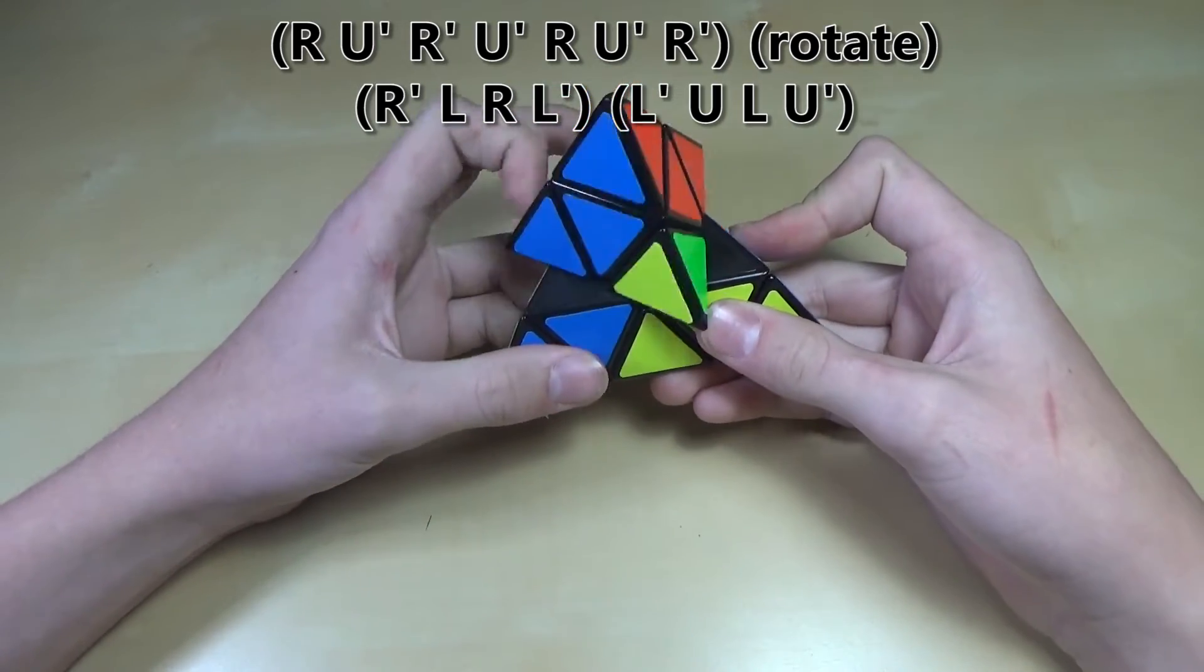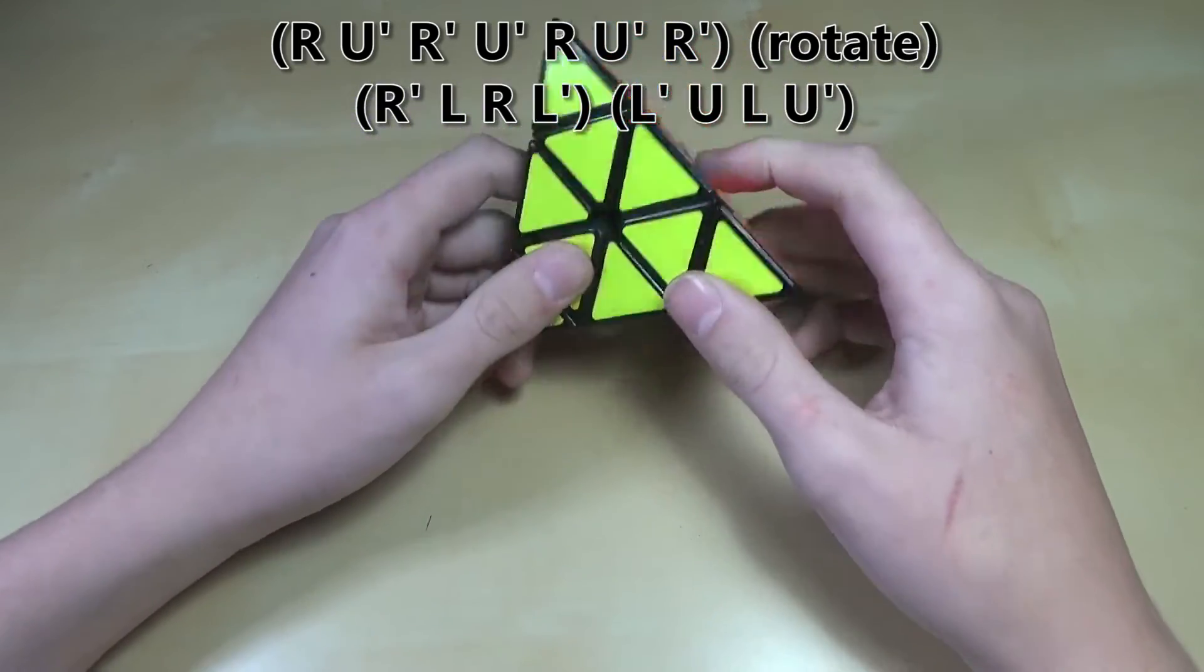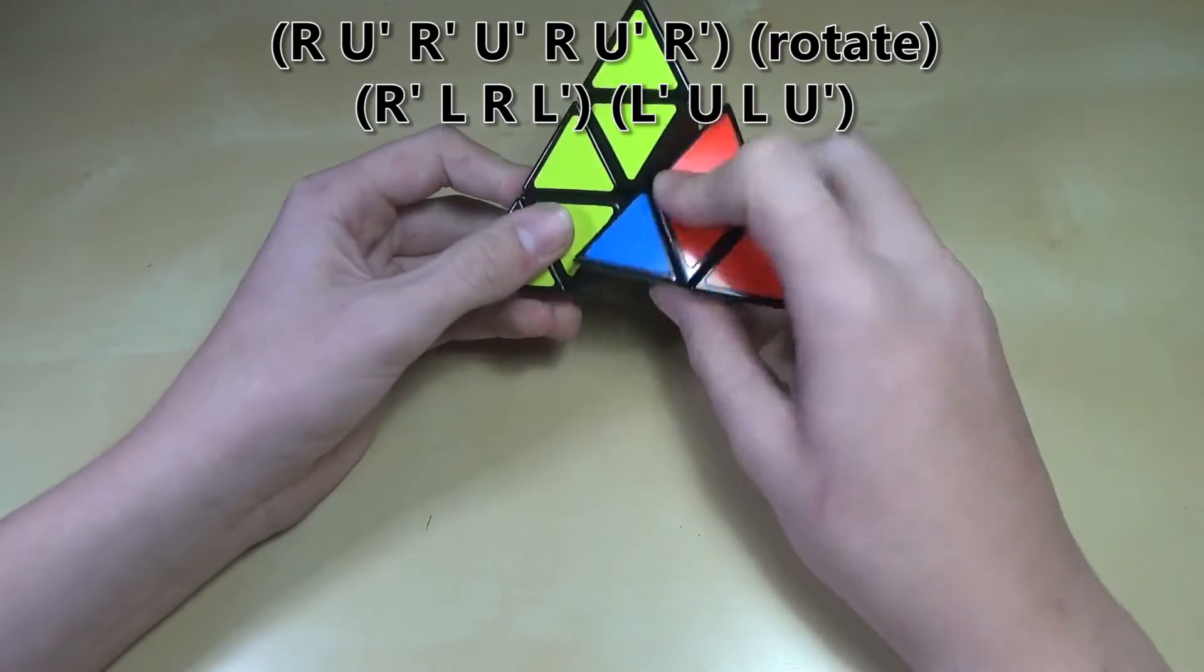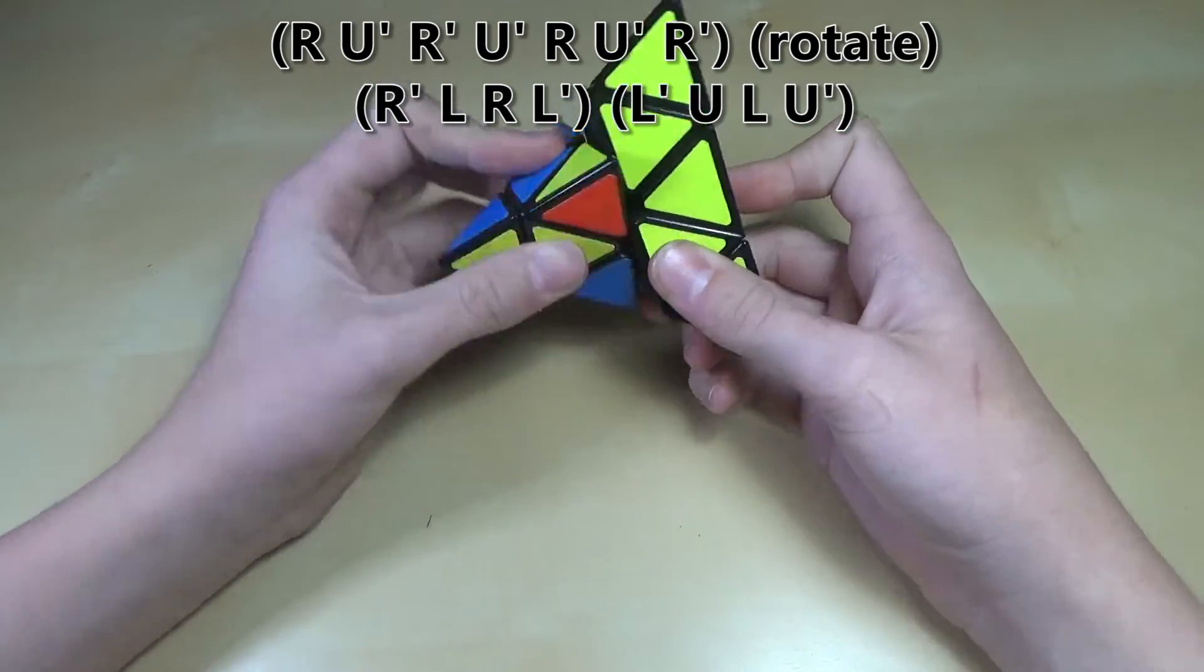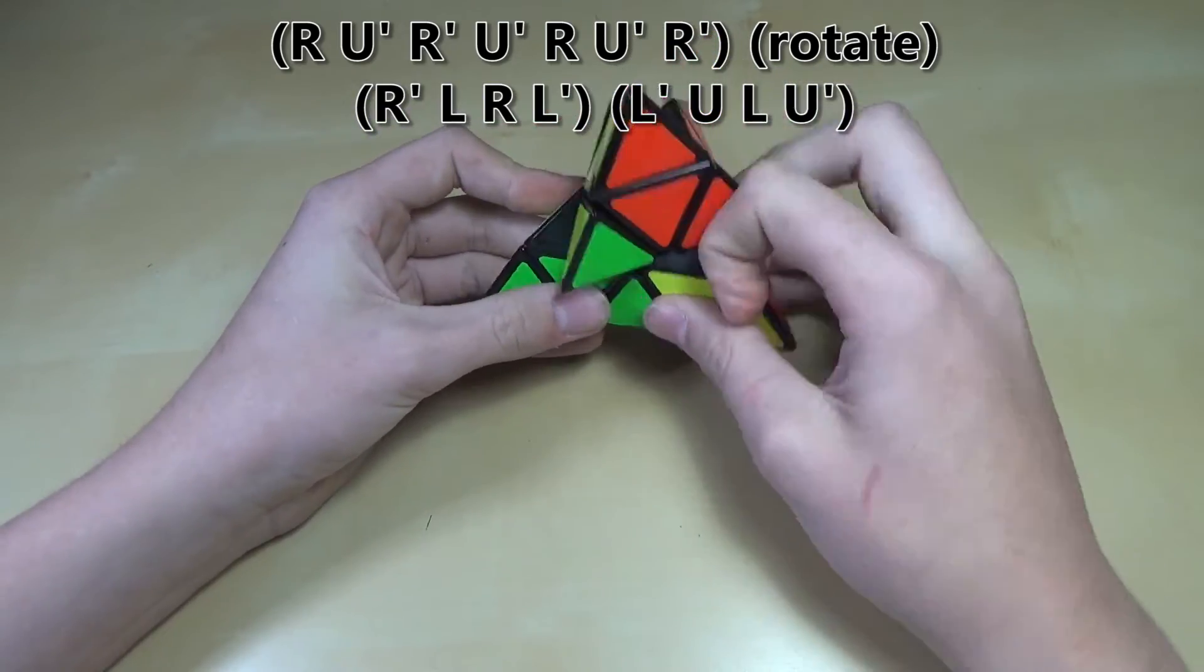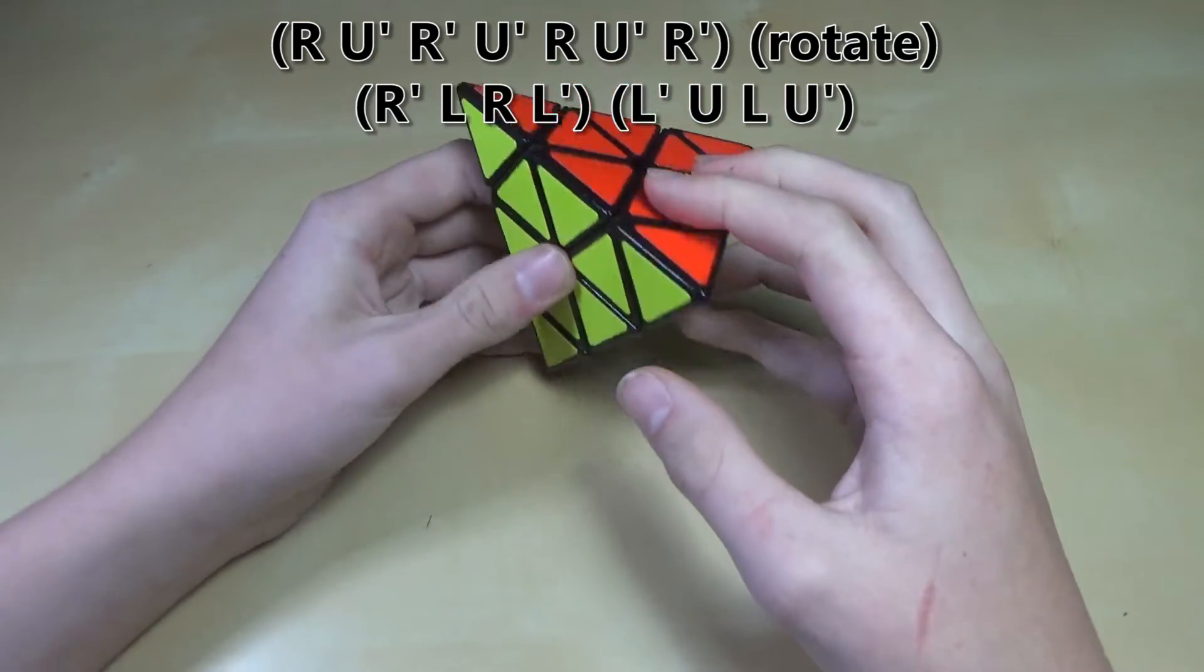R U', R', and that will get the top backwards. And then to get this bottom part back to where it started you just do R', L R', L' L', U', U', U'. And all those algorithms will be in description. I'll write those down and put those down there.